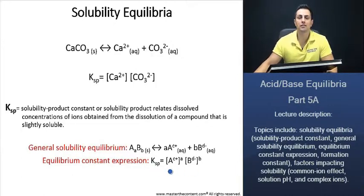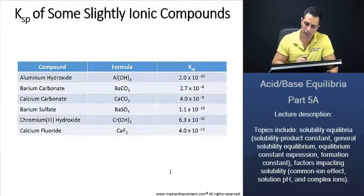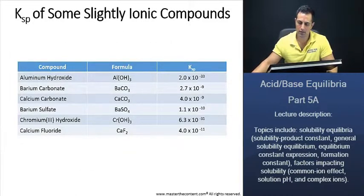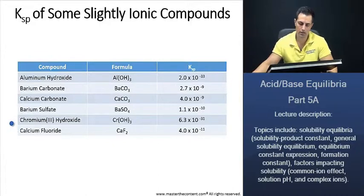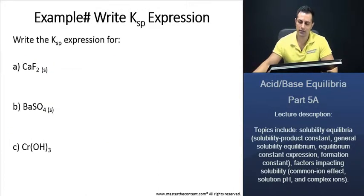Now let's get some practice in by doing some examples. Before that, let's take a look at some solubility product constants of some slightly ionic compounds. Here we're looking at aluminum hydroxide, barium carbonate, calcium carbonate, barium sulfate, chromium hydroxide, and calcium fluoride. Now we're ready for some examples.